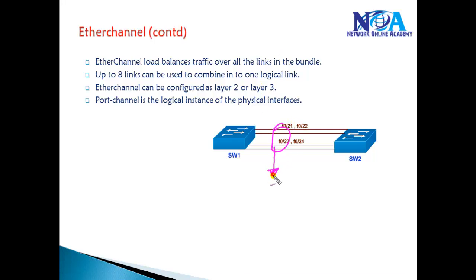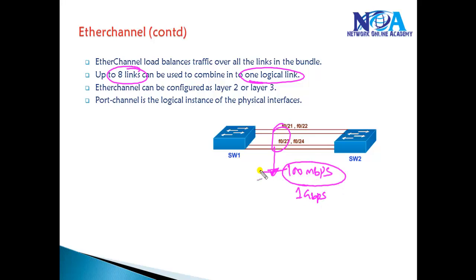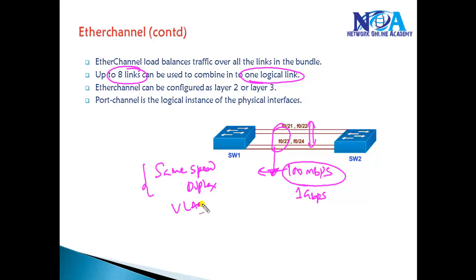We can aggregate up to eight links into one logical link. The ports can be 100 Mbps or 1 Gbps, but all links must be at the same speed. They must also have the same duplex settings. Physically, they don't need to be side by side. Those are the guidelines for EtherChannel. Additionally, all links must be on the same VLAN and should have common configurations — these are the major conditions before configuring EtherChannel.